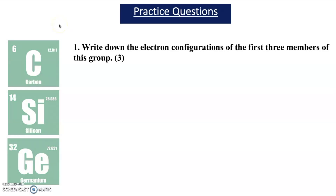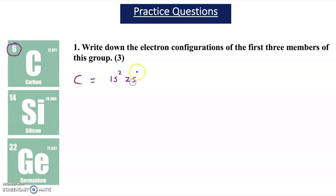Carbon is atomic number 6, which means it has 6 protons and 6 electrons. Its electron arrangement is 1s², 2s², 2p². It is classed as a p-block element because the last electrons that you put into orbitals go into p-orbitals.